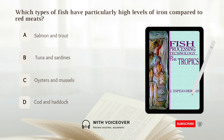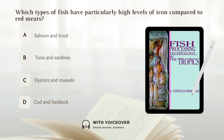Which types of fish have particularly high levels of iron compared to red meats? A. Salmon and trout. B. Tuna and sardines. C. Oysters and mussels. D. Cod and haddock. Answer: C. Oysters and mussels have particularly high levels of iron compared to red meats.